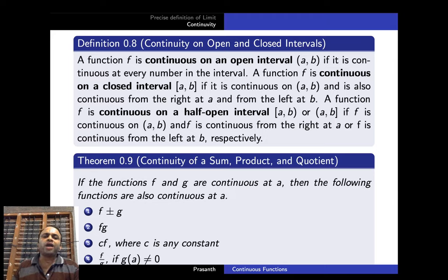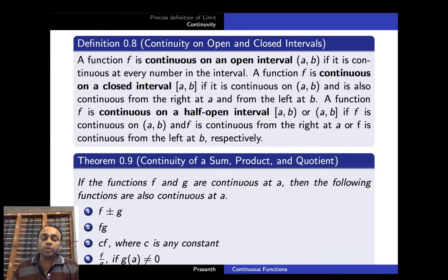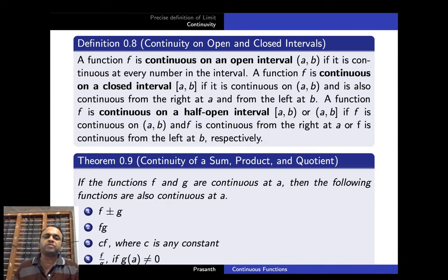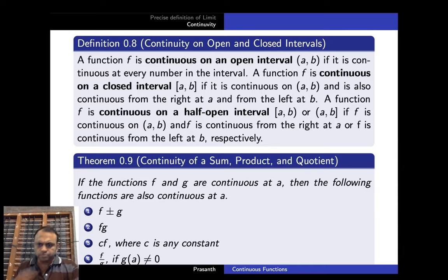A function f is said to be continuous on a half-open interval — either [a, b) or (a, b] — if f is continuous on the open interval (a, b) and, respectively, continuous from the right at a, or continuous from the left at b.